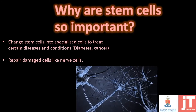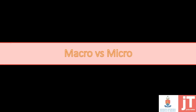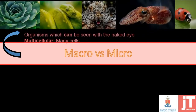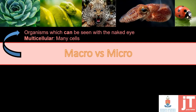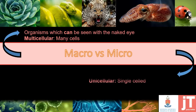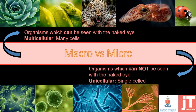Let's have a look at the difference between a macro and a microorganism, which we also did in grade eight. A macro organism refers to organisms that you can see with the naked eye — these are multicellular organisms, meaning they consist of millions and millions of cells. Microorganisms refer to organisms which we cannot see with the naked eye; we need a microscope to study them. Most of these organisms are unicellular, meaning they are single-celled, and these include bacteria, viruses, and fungi.